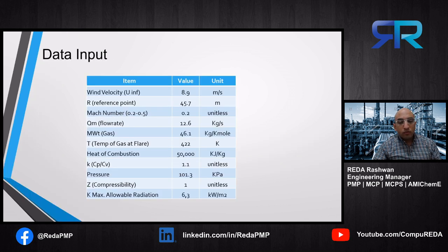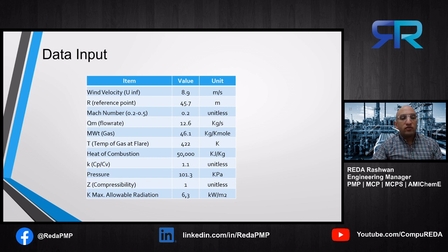These are the data inputs for our problem. I used the same values as in the API so that you are able to track the calculations easily. The inputs include: wind velocity, the reference point, the Mach number — which the API specifies from 0.2 to 0.5 — the flow rate of the gas, molecular weight, temperature, heat of combustion, CP over CV, pressure, the compressibility factor (we used one as an ideal gas), and the maximum allowable radiation for our reference point.